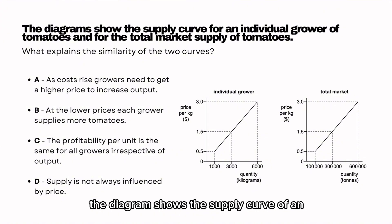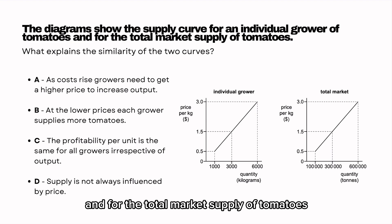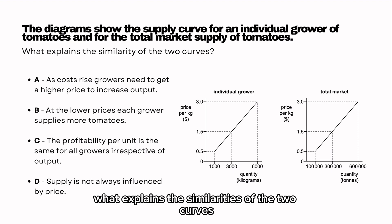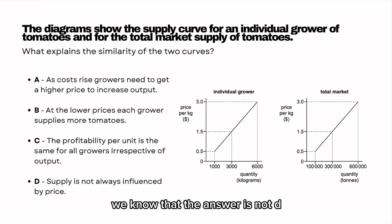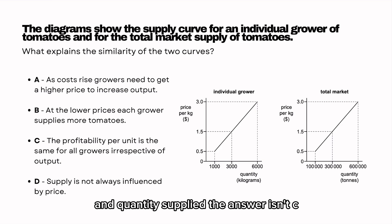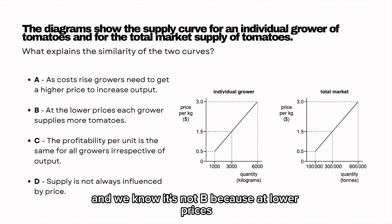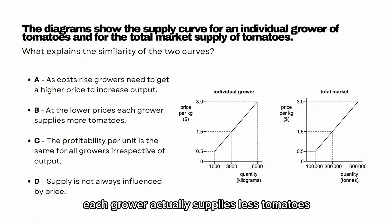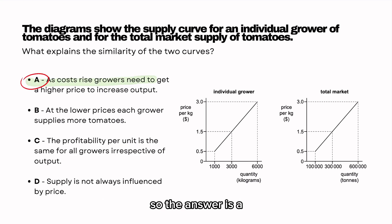The diagrams show the supply curve of an individual grower of tomatoes and for the total market supply of tomatoes. What explains the similarities of the two curves? The answer is not D as there is a positive correlation between price and quantity supplied. The answer isn't C as profitability actually increases, and it's not B because at lower prices each grower actually supplies less tomatoes. So the answer is A.